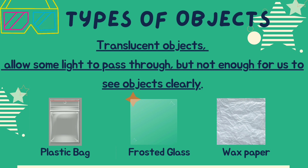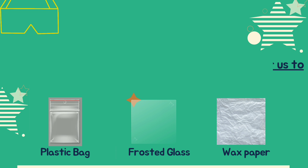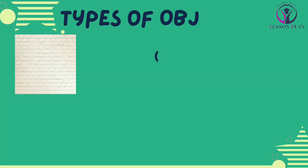Translucent objects, on the other hand, allow some light to pass through, but not enough for us to see objects clearly. Examples include frosted glass, wax paper, and some types of plastics.